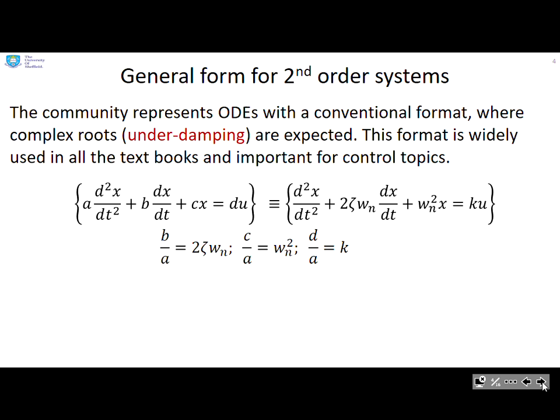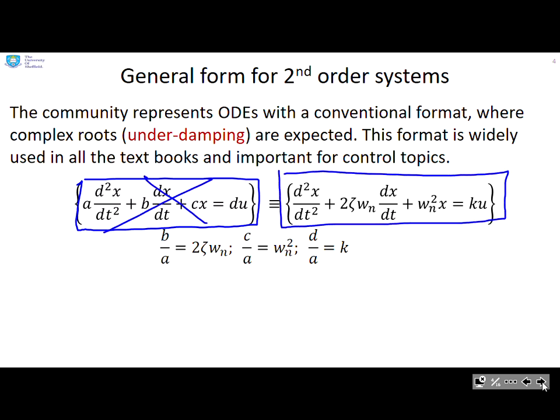The general form for second order systems then. The community represents ODEs with a conventional format where complex roots or underdamping are expected. This format is widely used in all the textbooks and it's important for control topics. So you can see I've given a generic second order ODE here with coefficients A, B, C and D. But what the community would rather you use is this form here: d²x/dt² + 2ζωₙ dx/dt + ωₙ²x = ku. This is the general form that's expected for underdamped responses.